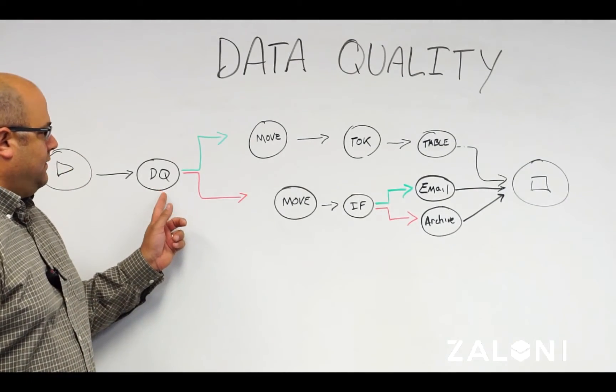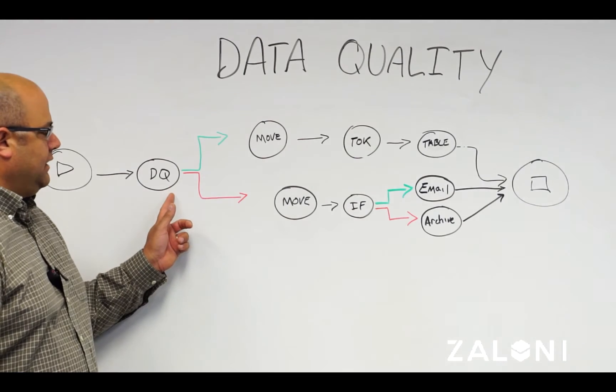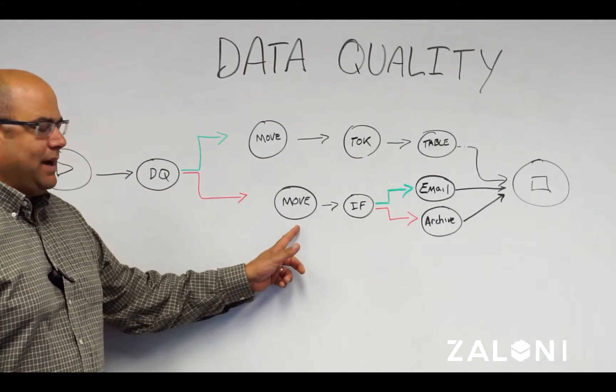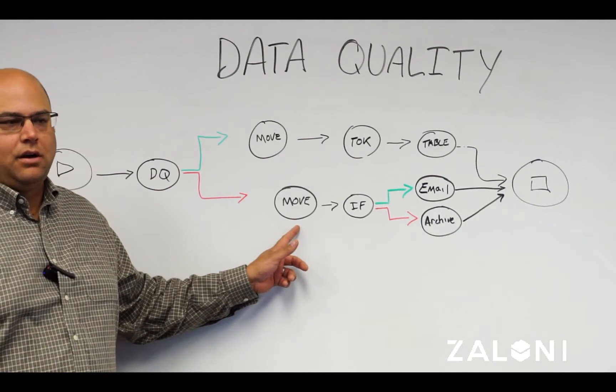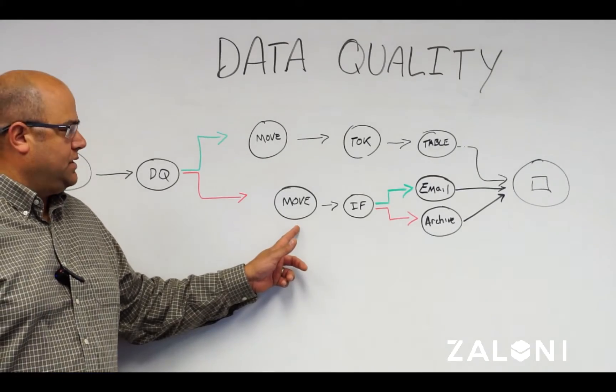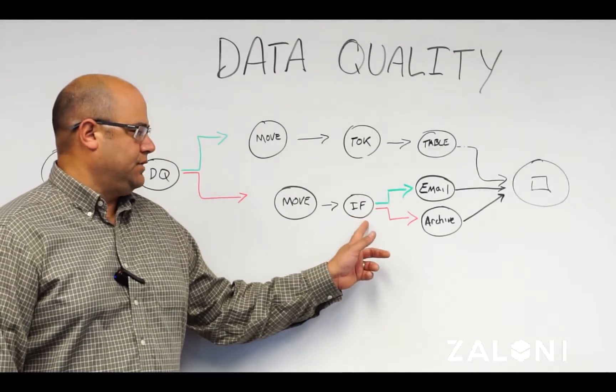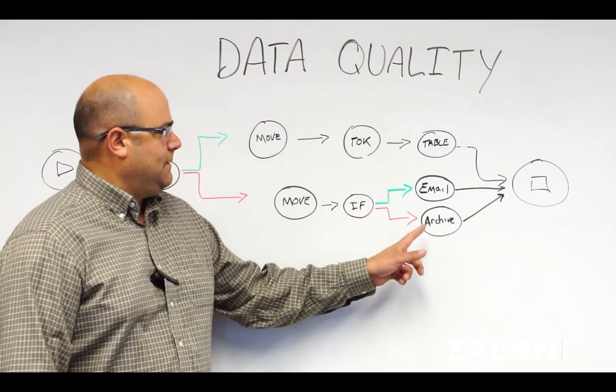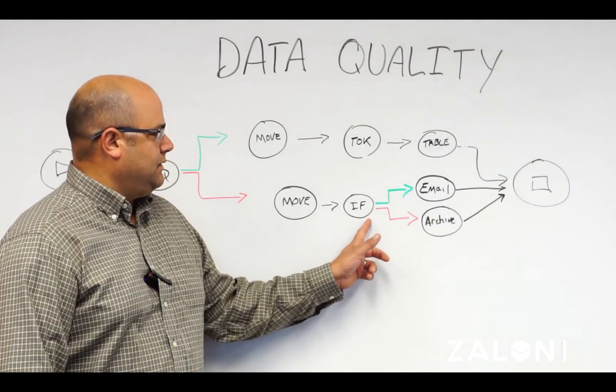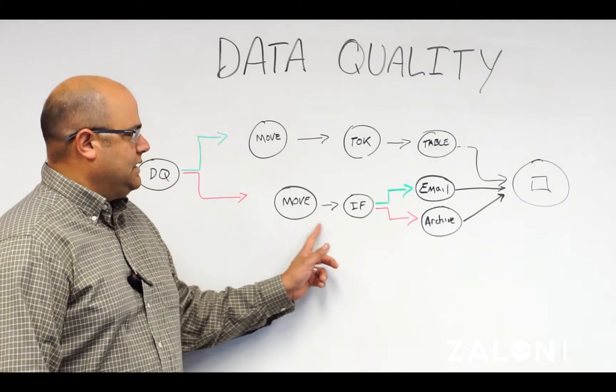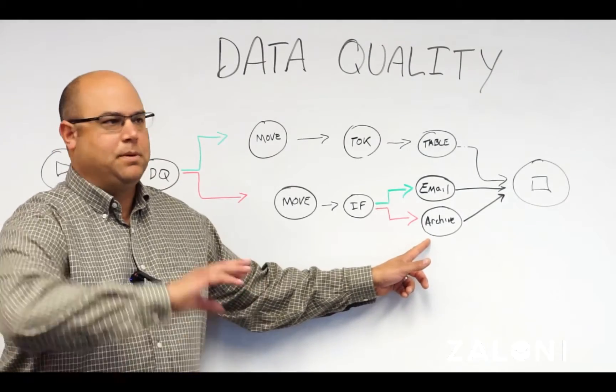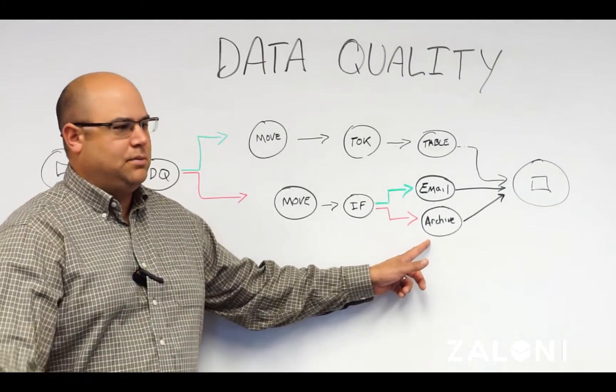Files or records that are failing the data quality check here might get moved to an alternate area, an archive or a different storage area. You might do some additional decisioning here that says, if a certain number of these files are moved into this directory, I'm going to go ahead and archive them. I'm going to tar them up and archive them. I'll save them.